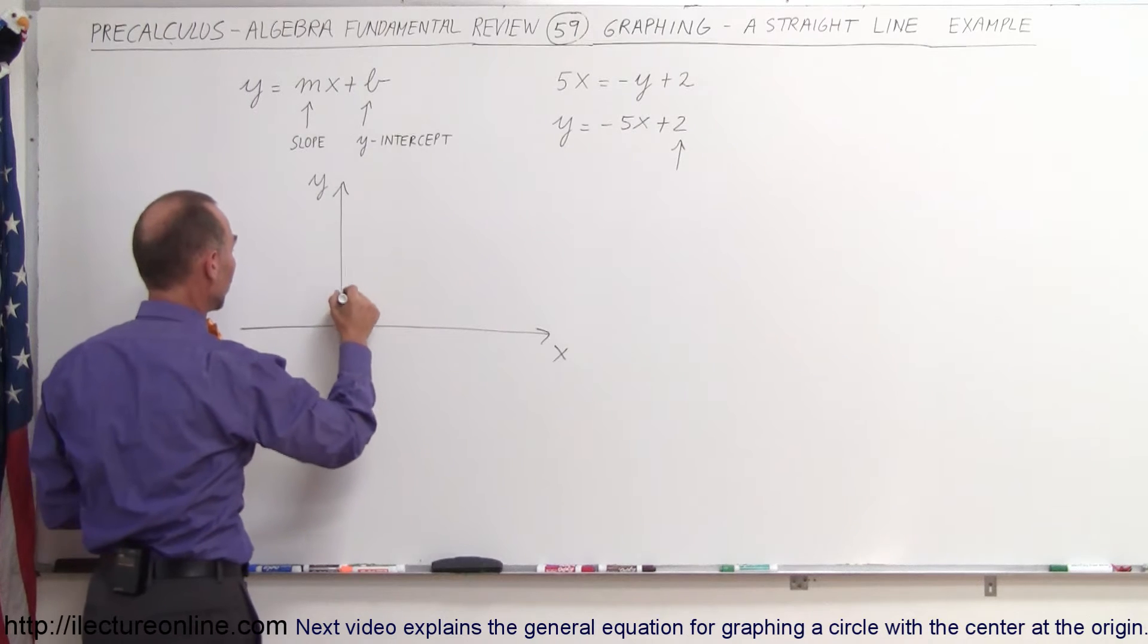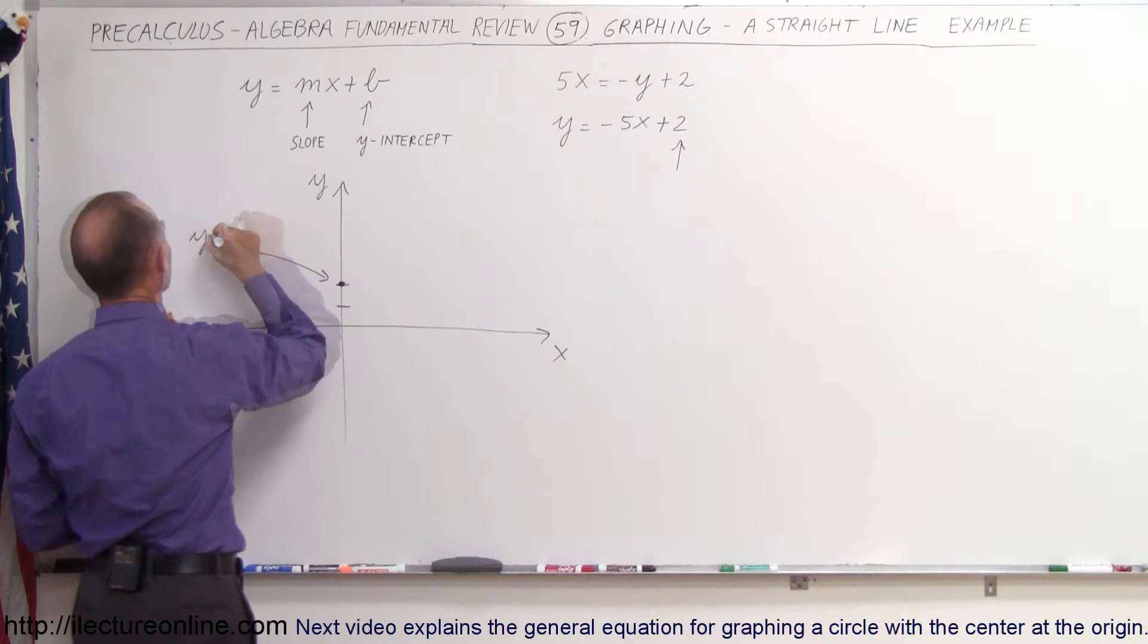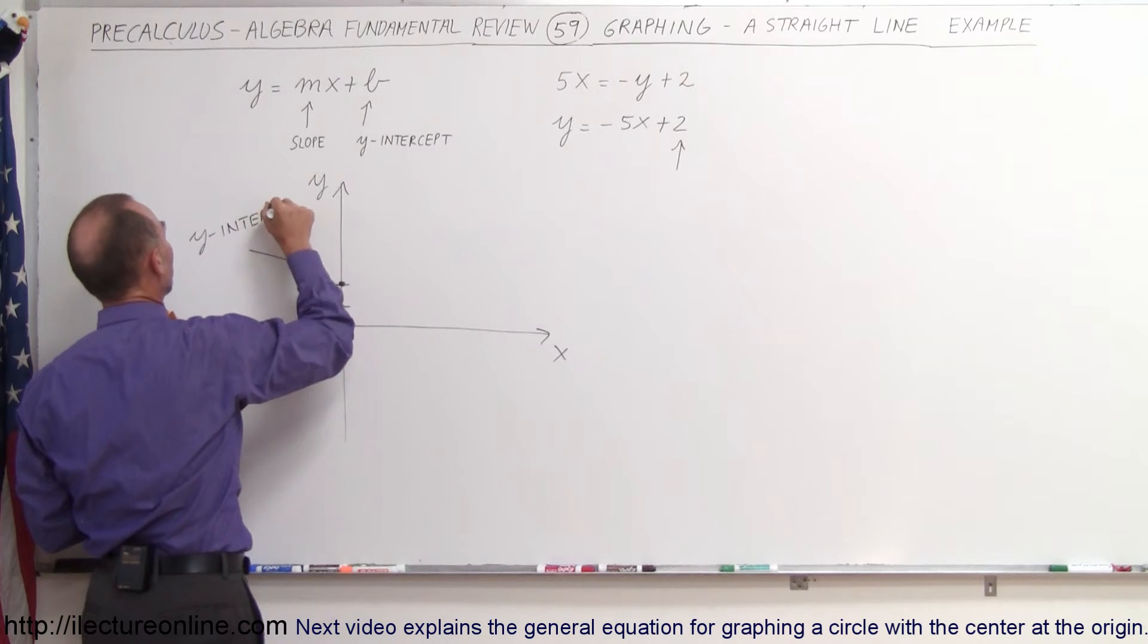So we find that point, 1, 2, it's right there. So that would be the y-intercept. Okay, that's the easy part.